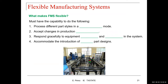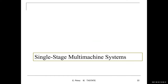What makes a flexible manufacturing system flexible? It must have the capability to process different part styles in a non-batch mode, accept changes in production schedule, respond gradually to equipment malfunction and breakdowns — unlike fixed manufacturing where that was a major problem — and accommodate the introduction of new part designs. Since you can access different machines with your material handling equipment, you can process different types of products.